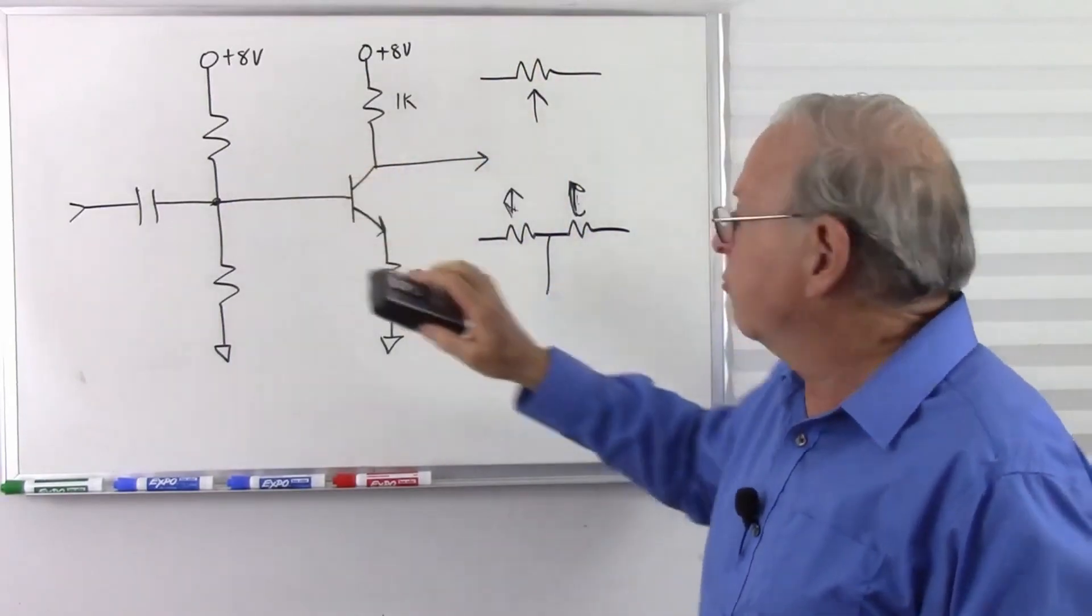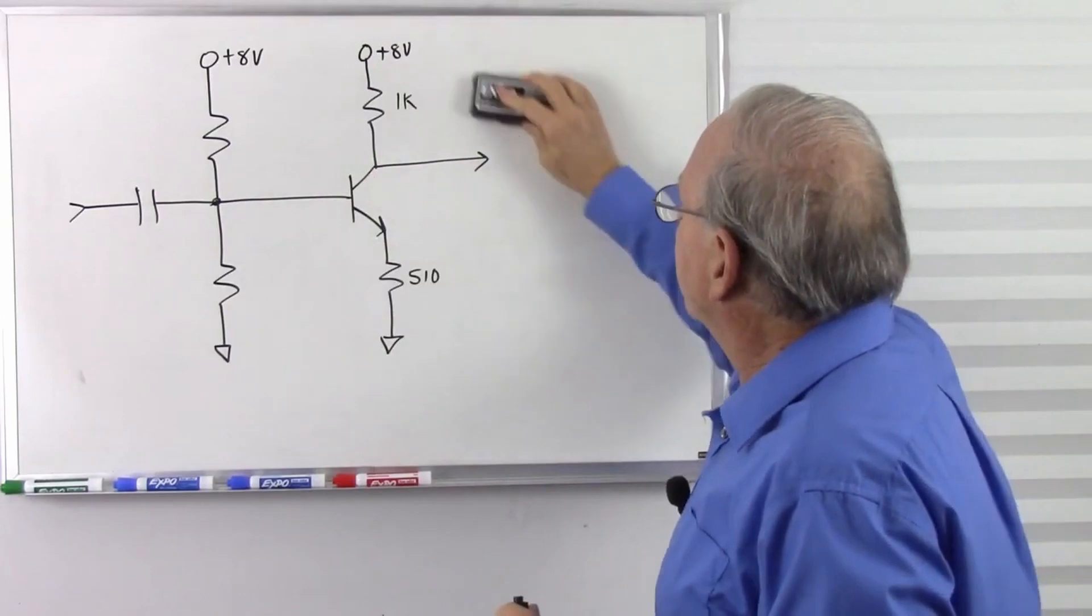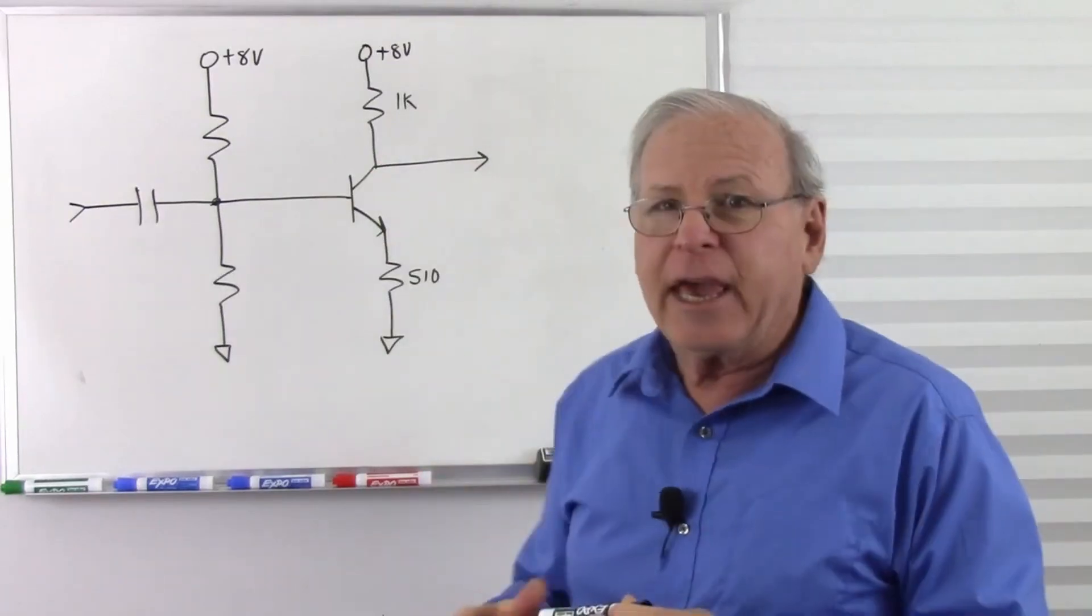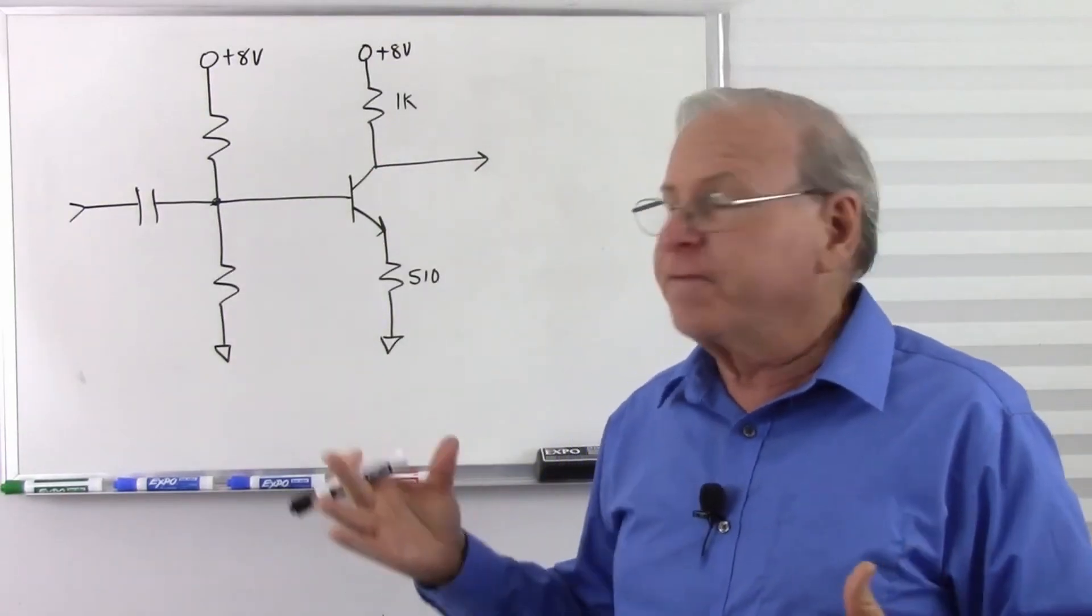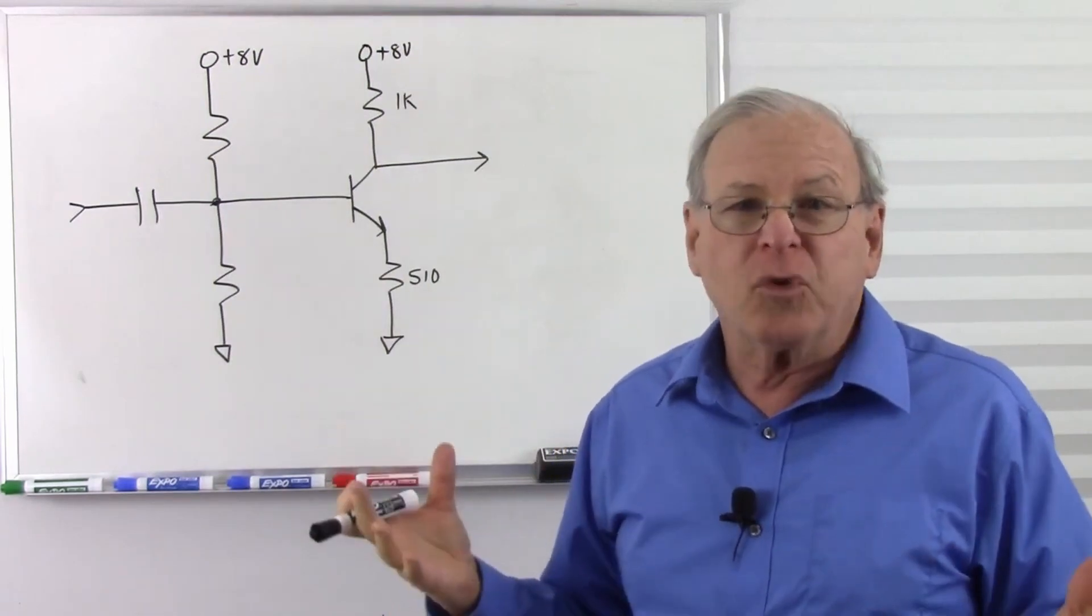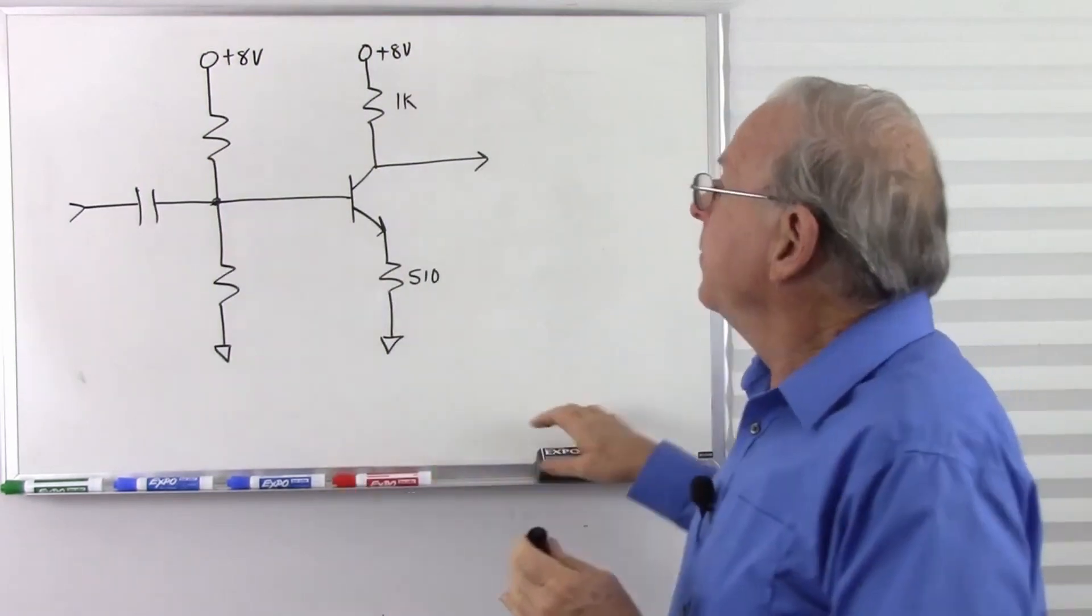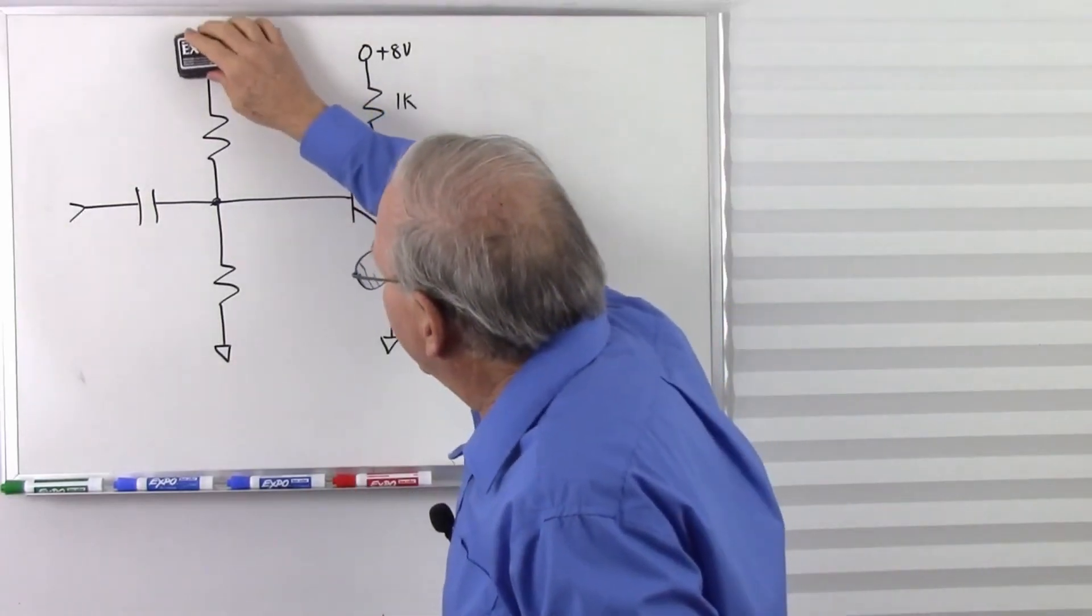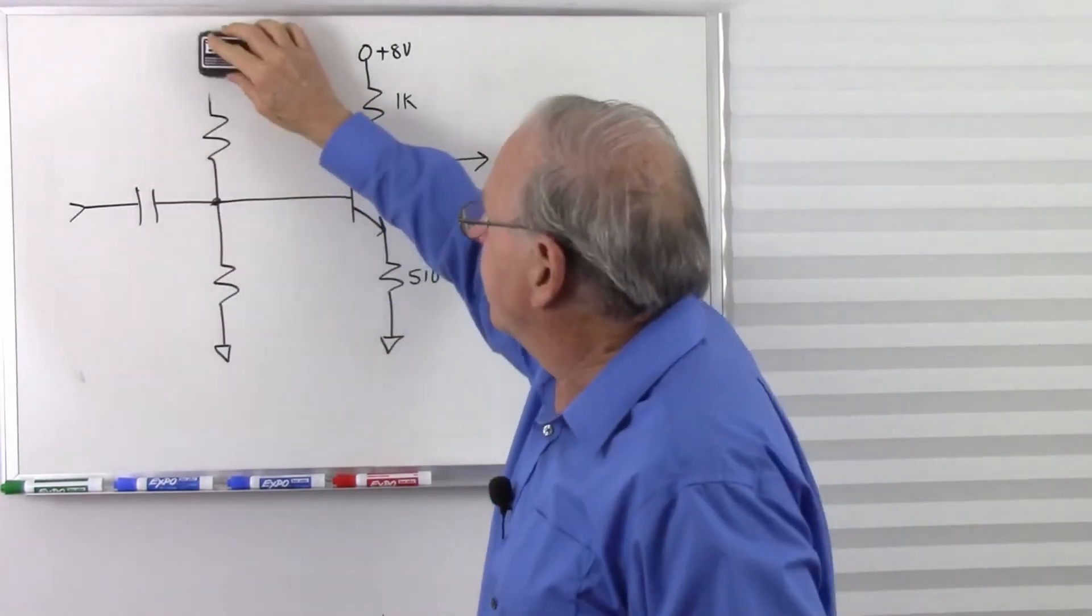And so I chose a 20k potentiometer. Why? I wanted a fairly high input impedance. I didn't do any calculations, I just thought 20k sounds reasonable to me. So let's go ahead, I'm going to eliminate this capacitor for a minute, well let's just, I'll leave it there.